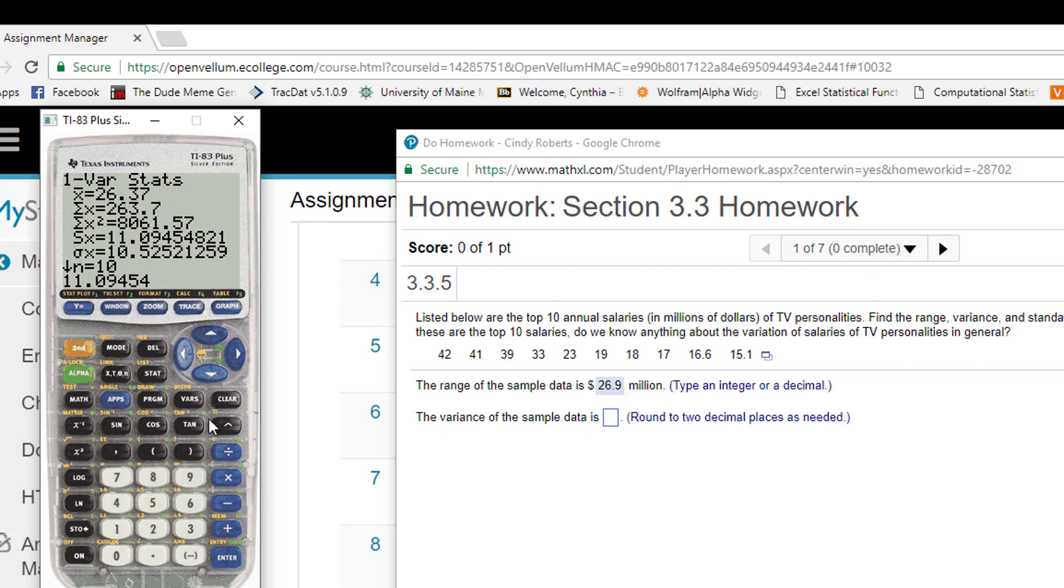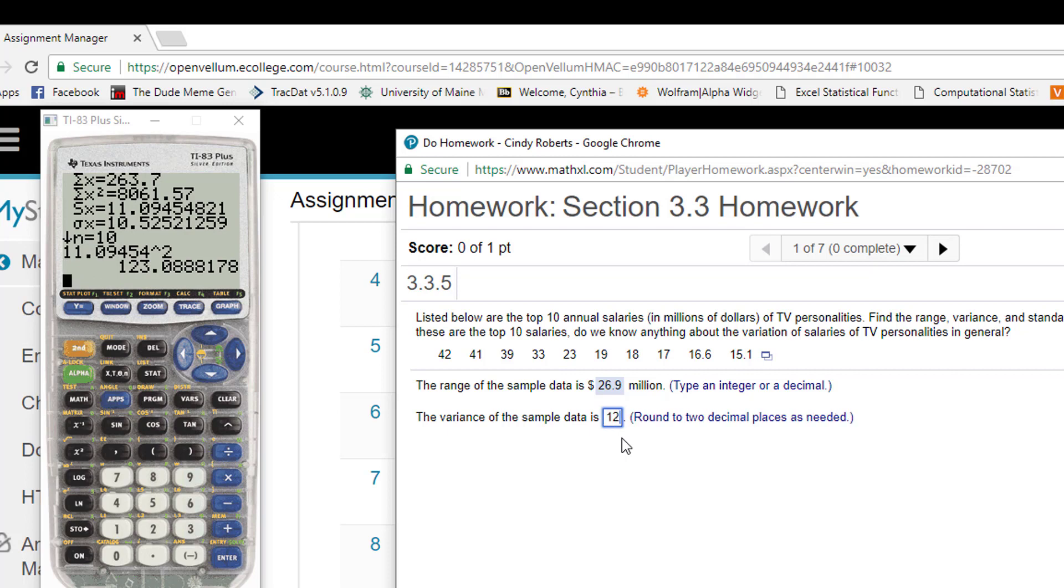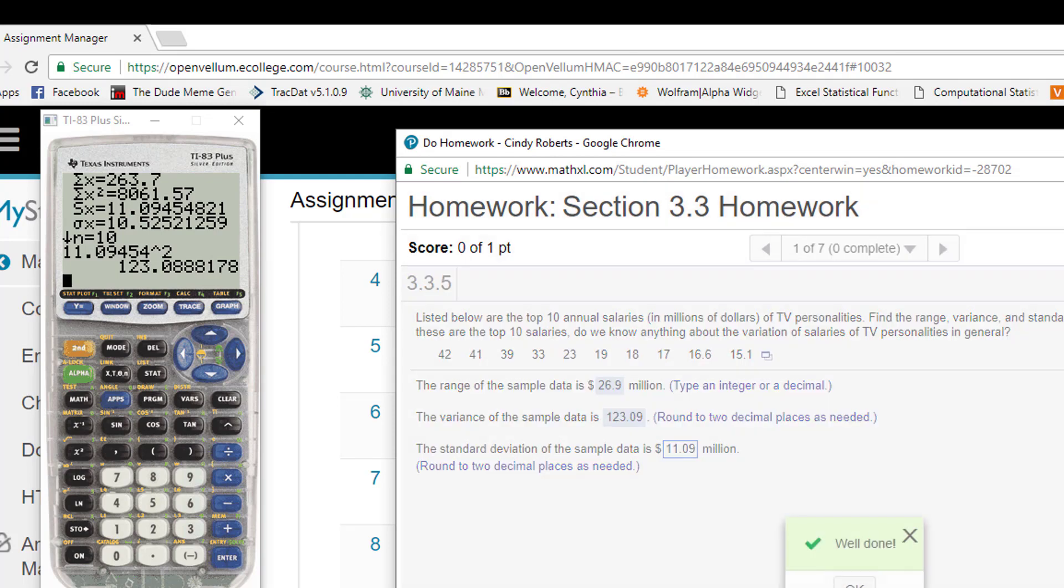Then the standard deviation is the square root of the variance, so the variance would be found by just squaring that number. It says here round to two decimal places. That's why you have to be careful that you put enough decimal places in. Nice work. And then the standard deviation is that value, so two decimal places: 11.09. That's actually given—that's the S value. Good job, well done.